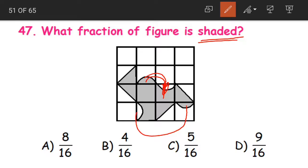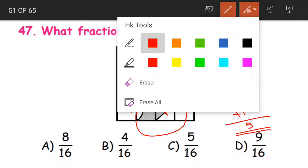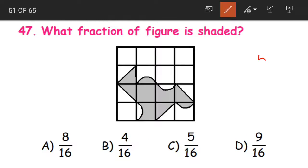And then again if I join these two, this will be one. So we have one, then plus another one — this would be one, and these two will become another one fully shaded block. Now apart from this, we are having another fully shaded block. When we add all these together, we are getting five fully shaded blocks. So this will be our numerator.